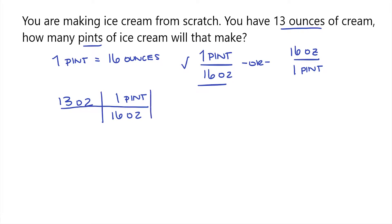Now we can solve our problem. So 13 ounces times one pint is simply 13 ounces times a pint, and our denominator will be just 16 ounces.